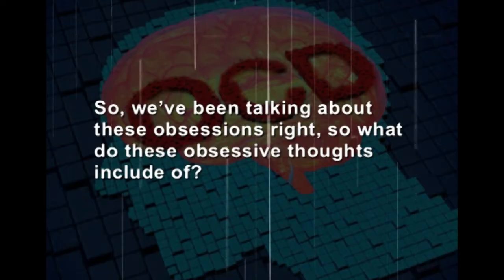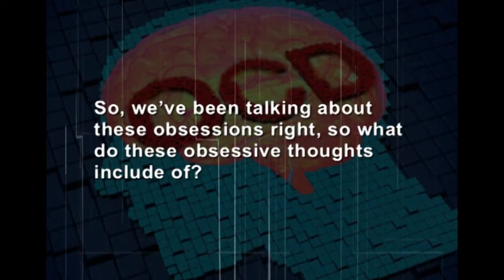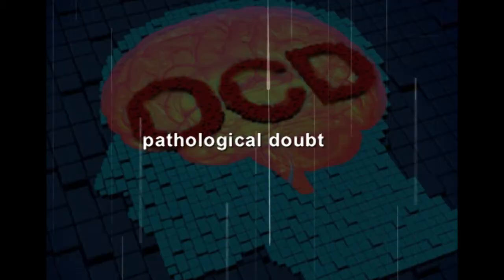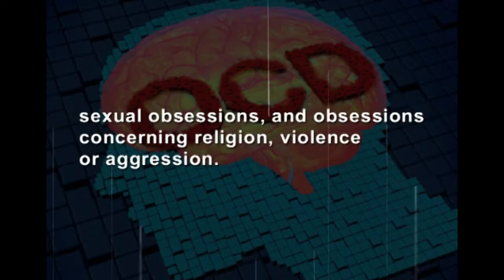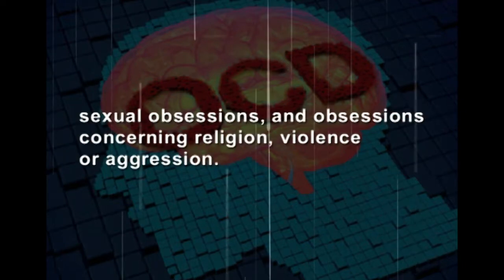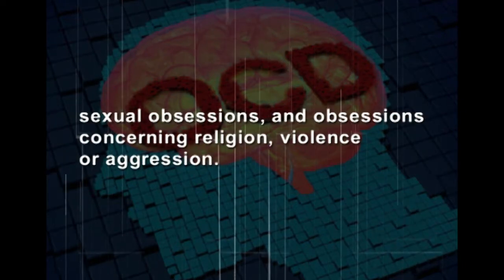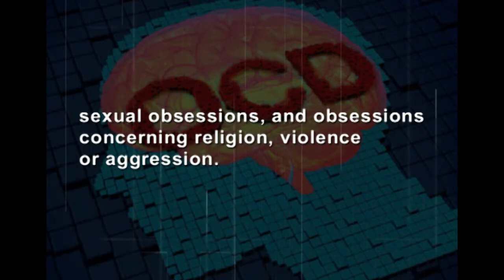As we have been talking about these obsessions, what do they include? Many obsessive thoughts involve contamination fears, fears of harming oneself or others, and pathological doubt. Other obsessions include themes of concern or need for symmetry, sexual obsessions, and obsessions concerning religion, violence or aggression.